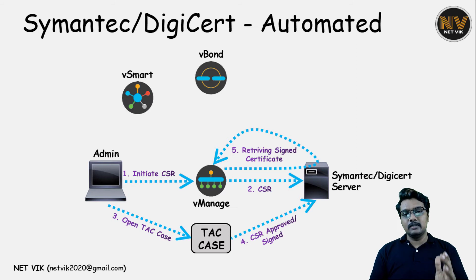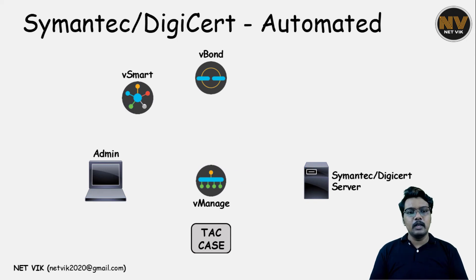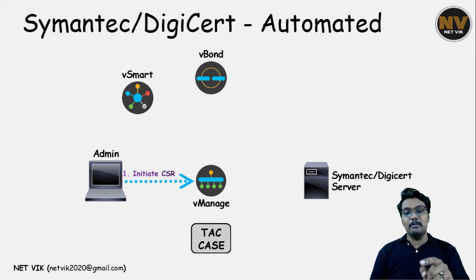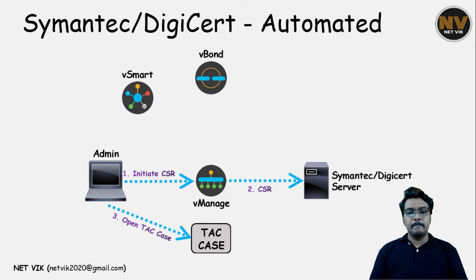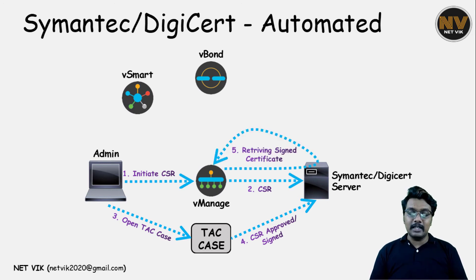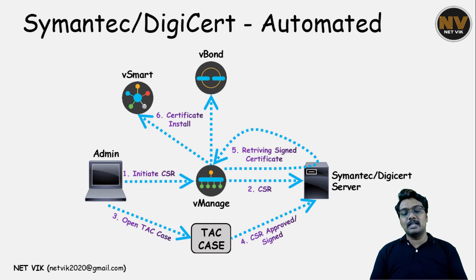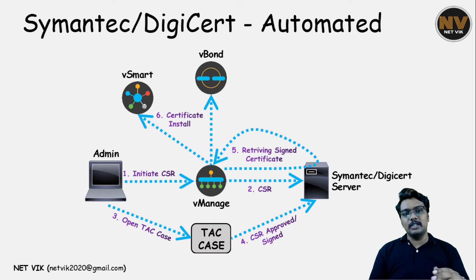Moving on, vSmart and vBond should also get a signed certificate. The administrator initiates a CSR in the vManage GUI, but this time it will be either for the vSmart or vBond, not for the vManage itself. Then vManage will submit that CSR — either vSmart or vBond's CSR — to the Symantec server on behalf of vSmart and vBond. The administrator opens a TAC case, the TAC team approves the CSR, and vManage retrieves the signed certificate for vBond or vSmart. Then vManage installs that signed certificate to vSmart and vBond. Here, vManage is acting as a kind of proxy.